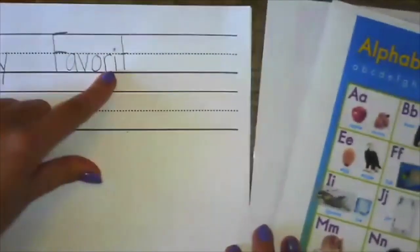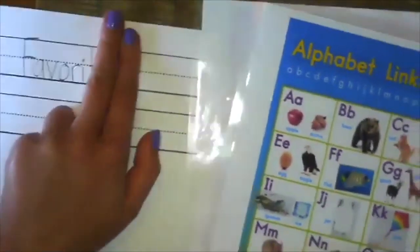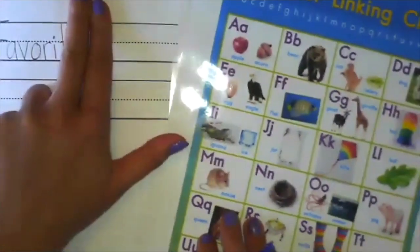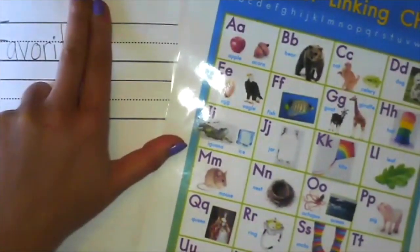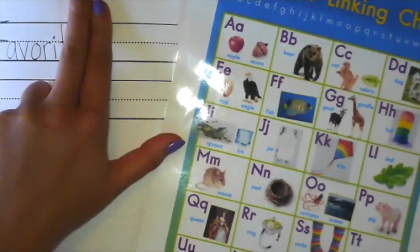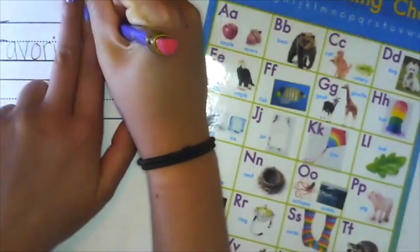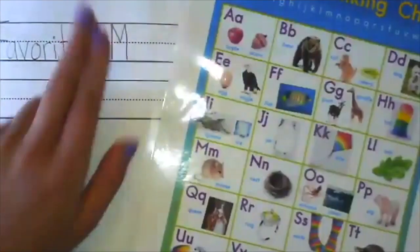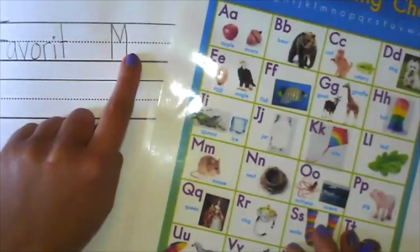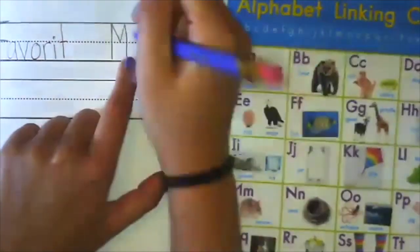Memories. Memories, what's the first sound you hear in memories? Yeah, M, mouse. What's the next sound you hear? Memories, I hear E, egg, EH.